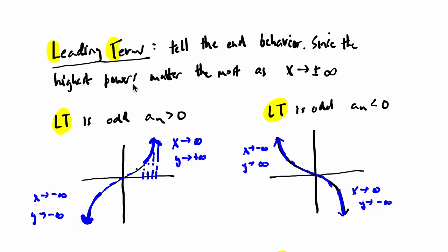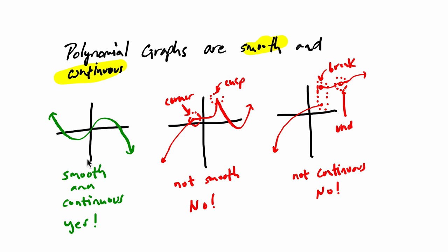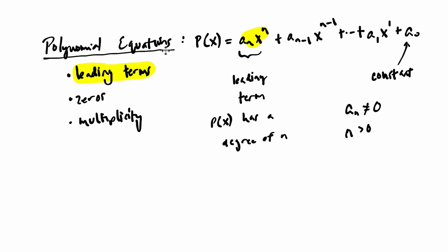Hello, welcome to part two of looking at polynomial functions and their graphs. In the last video, we introduced that polynomial graphs are smooth and continuous — sharp turns or gaps in the graph mean it's not a polynomial. We also talked about the importance of leading terms. In this video, we're going to extend our understanding of leading terms by looking at what happens through the algebra.